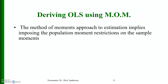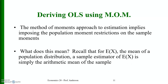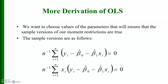The method of moments approach to estimation implies imposing the population moment restrictions on the sample moments. For example, a sample estimator of E[x] is simply the arithmetic mean of the sample. We choose parameter values to ensure that the sample versions of our moment restrictions hold: (1/n) * Σ(y_i - beta_naught_hat - beta_1_hat * x_i) = 0, and (1/n) * Σ x_i(y_i - beta_naught_hat - beta_1_hat * x_i) = 0.